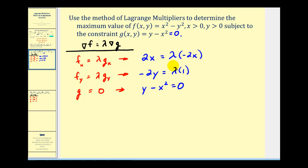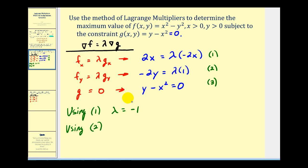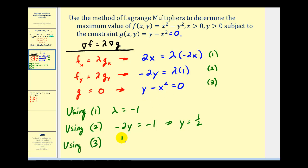Now let's solve this system. Using equation one, if we divide both sides by negative 2x, we get 2x divided by negative 2x equals negative 1, so lambda equals negative 1. Using equation two with lambda equal to negative 1, we have negative 2y equals negative 1, and dividing both sides by negative 2 gives y equals 1/2. Finally, using equation three with y equal to 1/2, we get 1/2 equals x squared. Taking the square root of both sides gives x equals plus or minus 1 over the square root of 2.